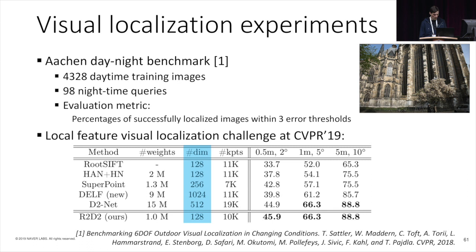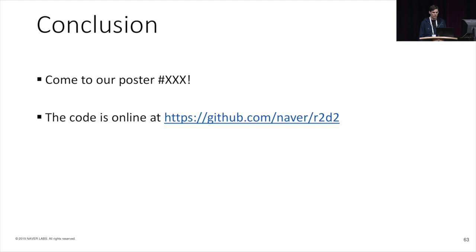To conclude, I presented R2D2 — Repeatable and Reliable Detector and Descriptor. We have introduced the notion of keypoint reliability at keypoint extraction time, and we have proposed two novel losses that are very effective to learn better keypoints. Last but not least, the code is available on our GitHub. Thank you for your attention and don't hesitate to come to our poster, number 98.